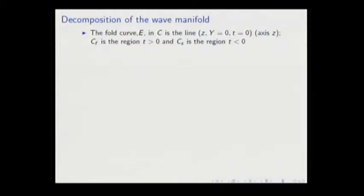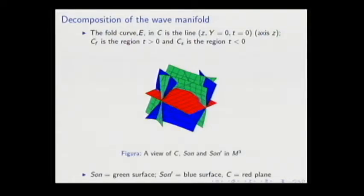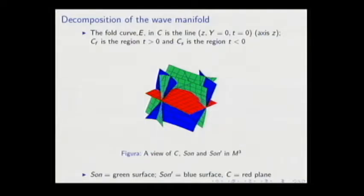We have some idea of how the surfaces appear in the wave manifold in this picture. The red plane is the characteristic Y equals zero. The blue surface is the sonic prime curve. The red and green surface is the sonic surface. Here we have the inflection curve — the intersection of one component and the other component — it is like a hyperbola. Here we have the two double sonic lines.